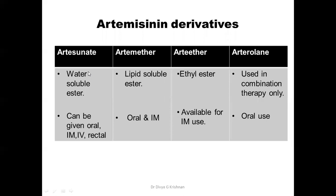Regarding differences between artemisinin derivatives: artesunate is water-soluble and can be given orally, IM, IV, or rectally. Artemether is lipid-soluble and can be given only orally and IM, with no IV or rectal route. Arteether is available for IM use only, whereas arteolane is used only orally. For IV use, only artesunate is available.